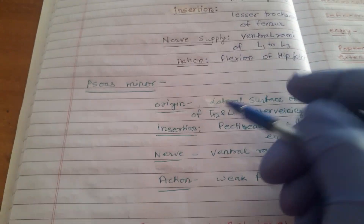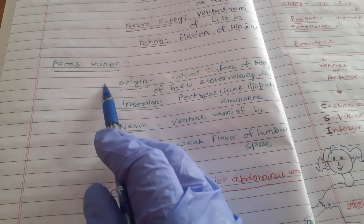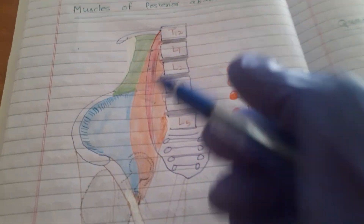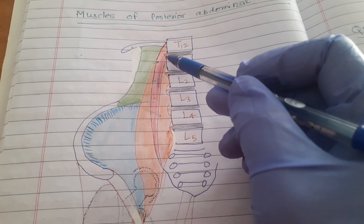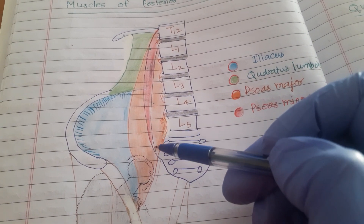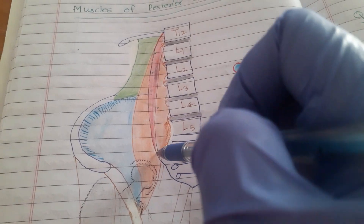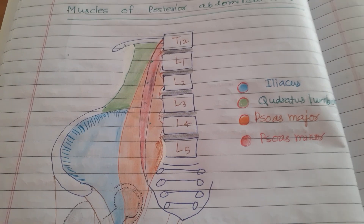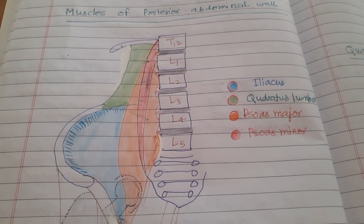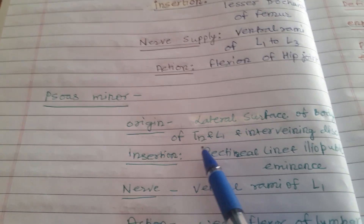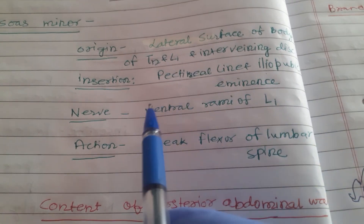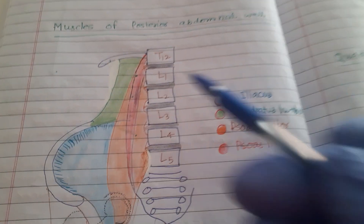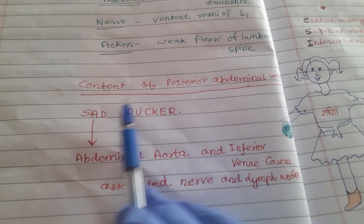Psoas minor, shown in red, is present in only 50% of cases. It takes origin from the lateral surface of the body of T12 and L1 and the intervening disc below. It inserts over the pectineal line and the iliopubic eminence of the hip bone on its internal aspect. Nerve supply is the ventral rami of L1. Action is weak flexion of the lumbar spine.